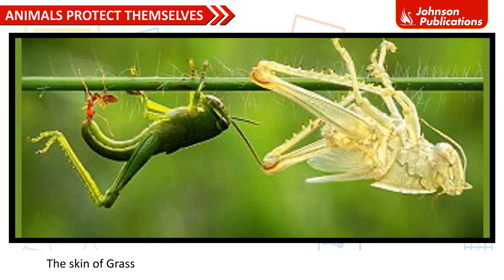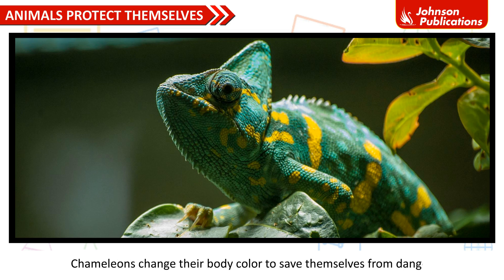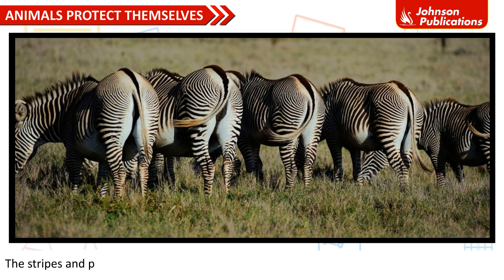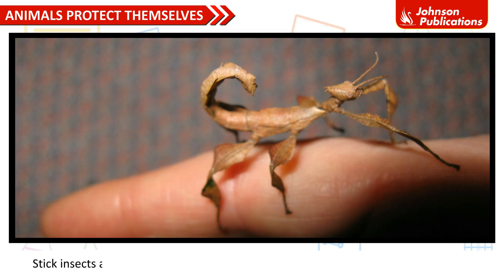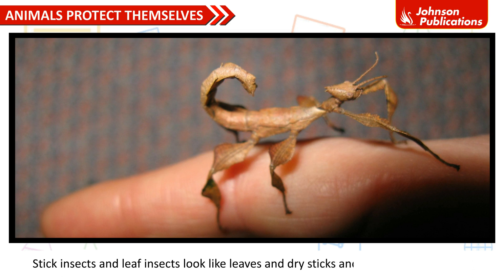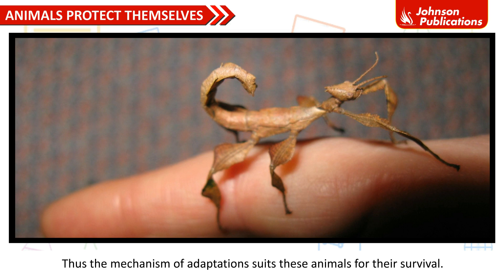The skin of grasshoppers matches with green leaves, so they can't be seen. Chameleons change their body color to save themselves from danger. The stripes and patches on the bodies of zebras, deer and frogs match with their surroundings. Stick insects and leaf insects look like leaves and dry sticks and could not be noticed. Thus, the mechanism of adaptations suits these animals for their survival.